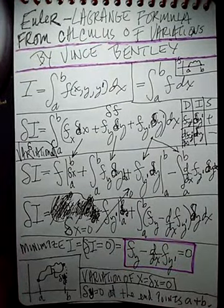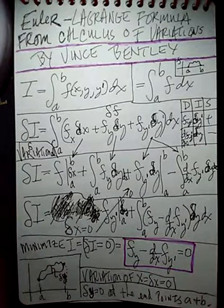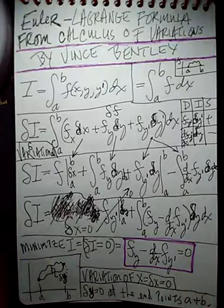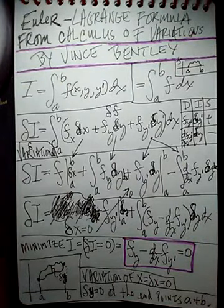Okie dokie. Today we're going to derive the Euler-Lagrange formula for the calculus of variations. Once again, because I already have a video on this derivation, but it is twice as long, or has twice as many steps at least. So this is a lot easier derivation.